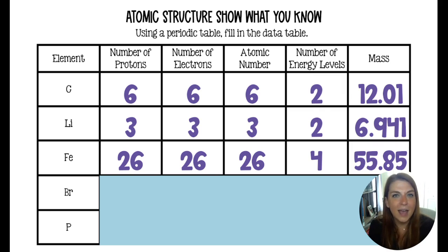Again, the mass is an average of all of the lithium atoms on earth. And moving on to iron, iron is number 26 on the periodic table. It's in the center block of the periodic table.